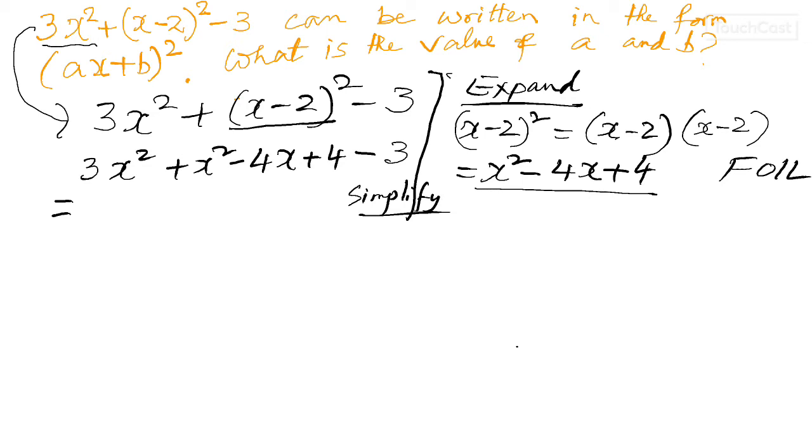I'm going to underline the like terms. That'll give me 4x squared, and that'll give me negative 4x. If I add those two like terms, that'll give you 1. Now it's a matter of factorizing it.